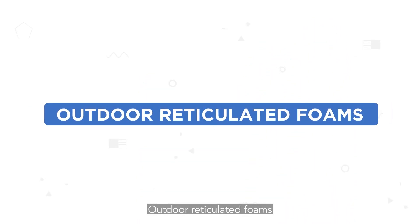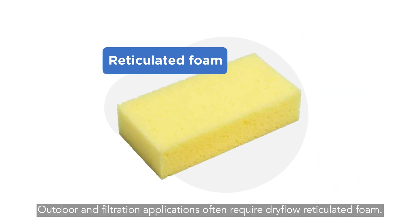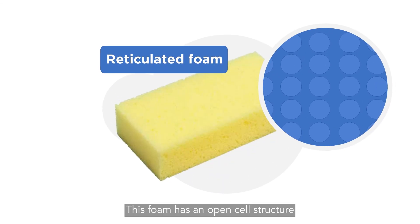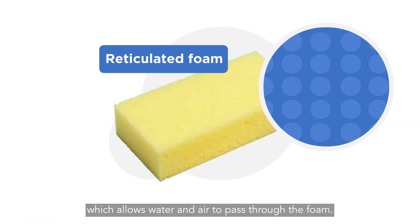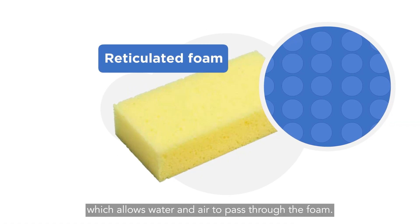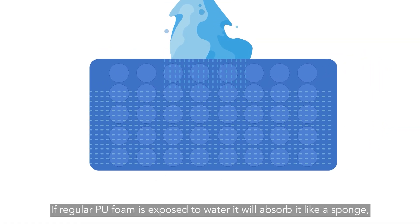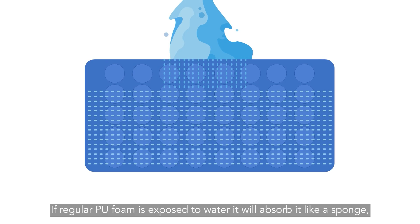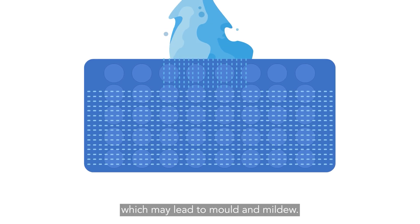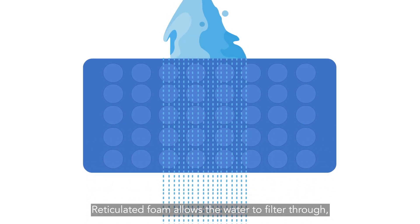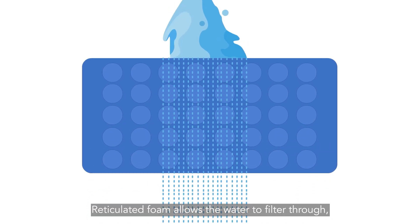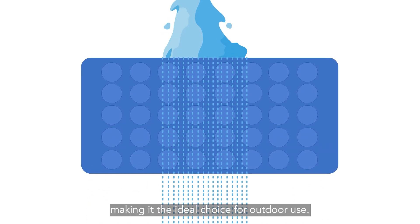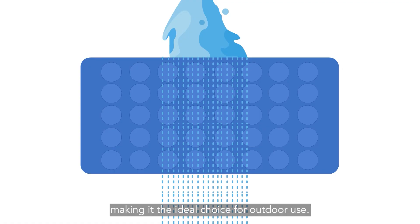Outdoor reticulated foams: outdoor and filtration applications often require dry flow reticulated foam. This foam has an open cell structure which allows water and air to pass through the foam. If regular PU foam is exposed to water, it will absorb it like a sponge, which may lead to mould and mildew. Reticulated foam allows the water to filter through, making it the ideal choice for outdoor use.